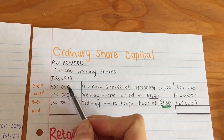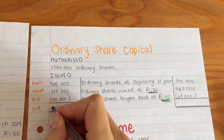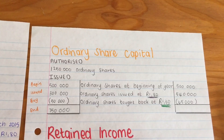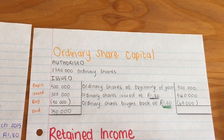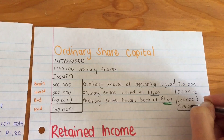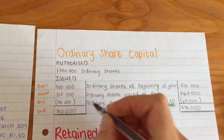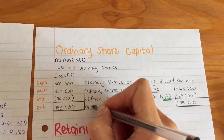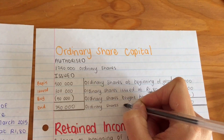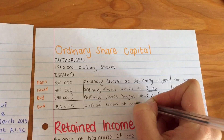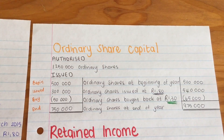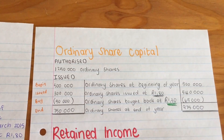So now: 800,000 minus 50,000 gives me 750,000 shares, and the rand amount gives me R975,000. I end off writing 'ordinary shares at end of year.' That is how you complete a share capital note.